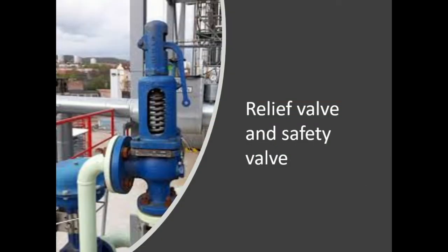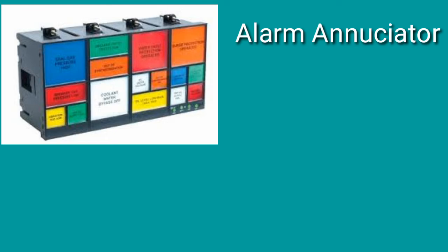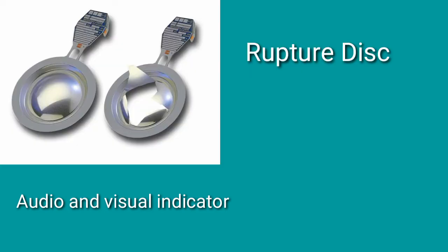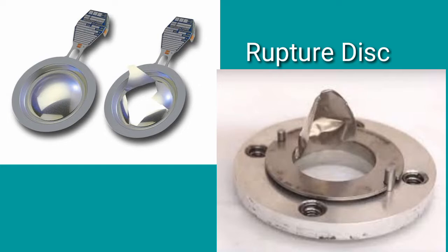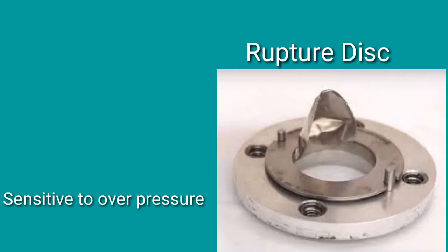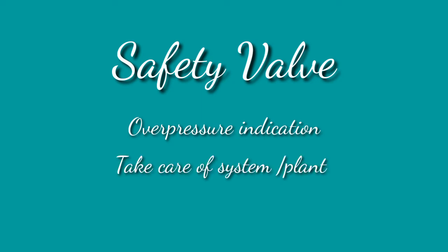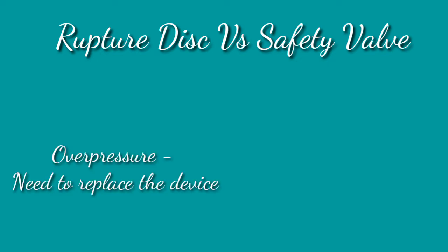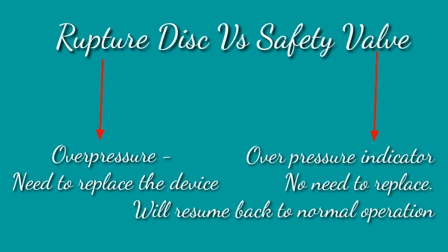Hello all, and welcome to my channel. Today we are going to discuss about the next safety device: the relief valve and safety valve. First we had seen the alarm annunciator, a completely different operation — it is a visual and audio indicator. Then we had seen a rupture disc, which is a self-destructing disc. Whenever overpressure occurs, it gives an indication, but the disadvantage is that every time overpressure takes place you have to replace it with a new rupture disc.